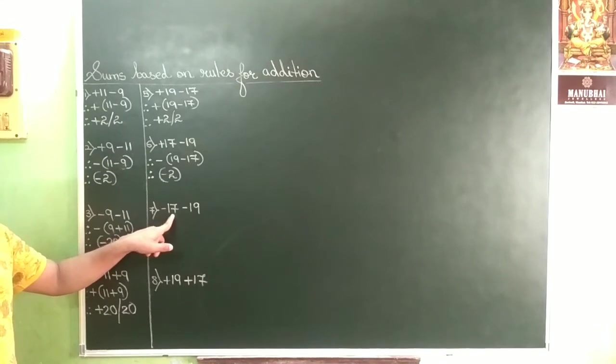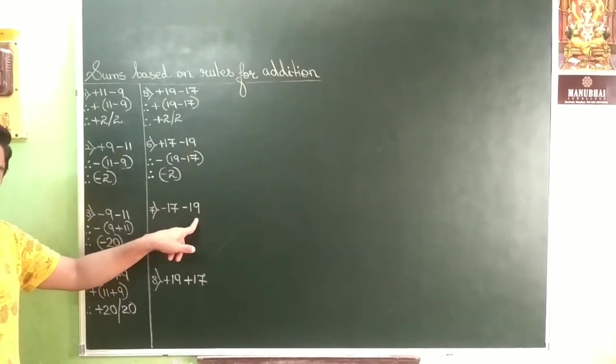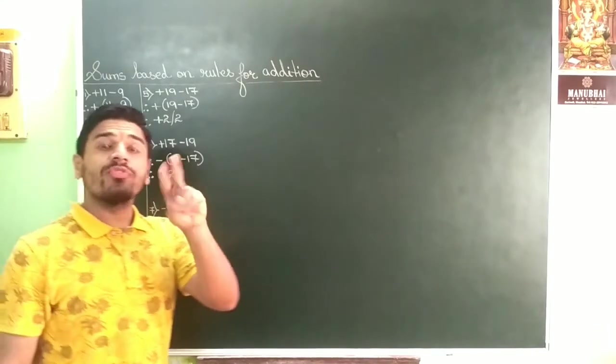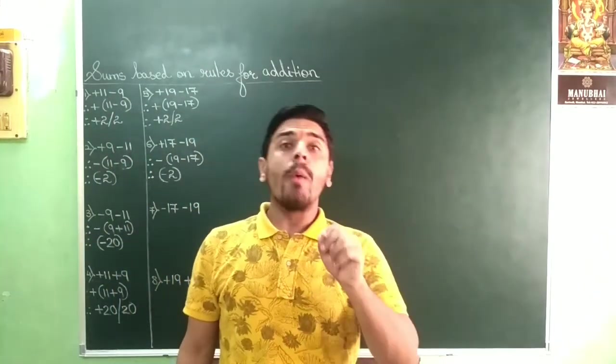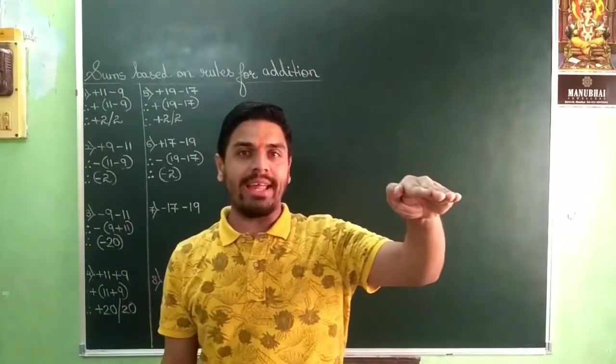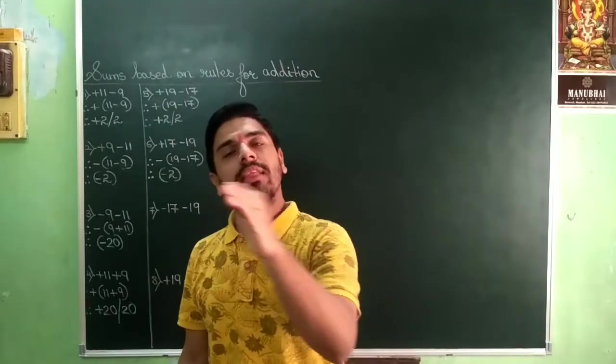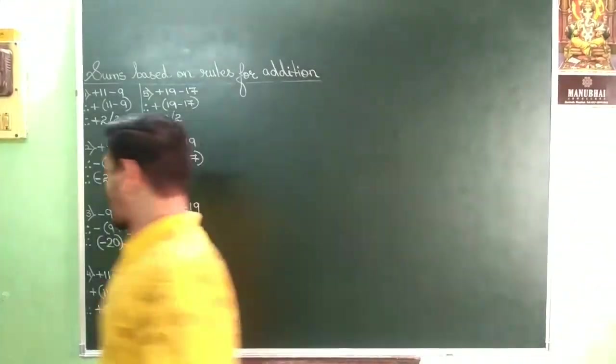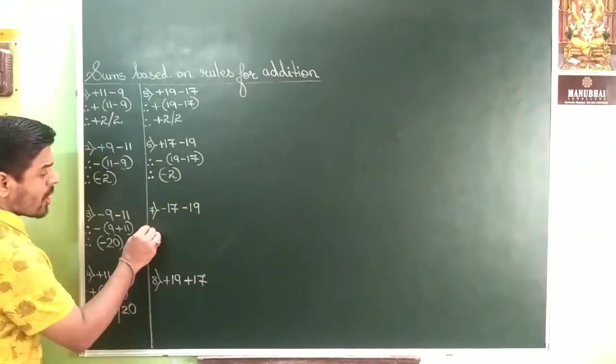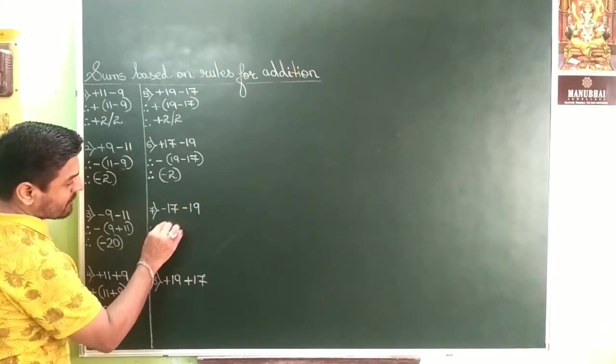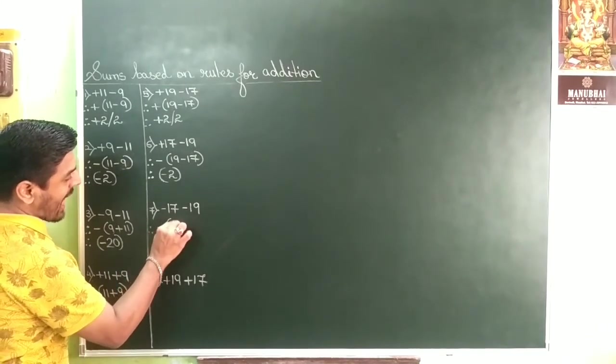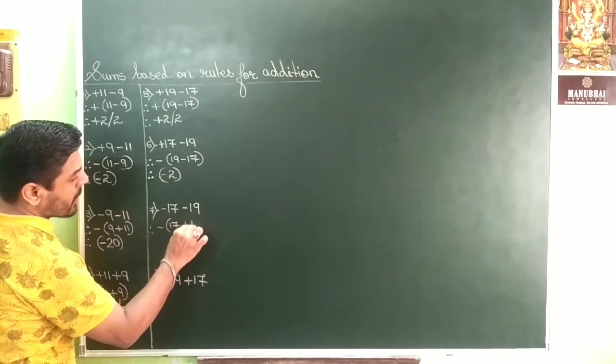Negative 17, negative 19. When both numbers are negative, put a minus sign and always add the numbers. Now, you will put a minus sign and always add the numbers.